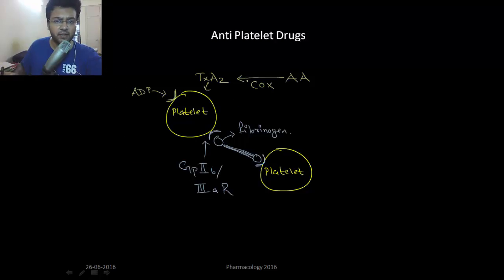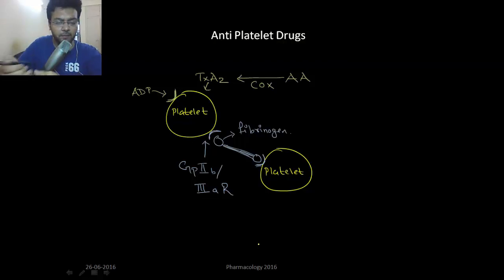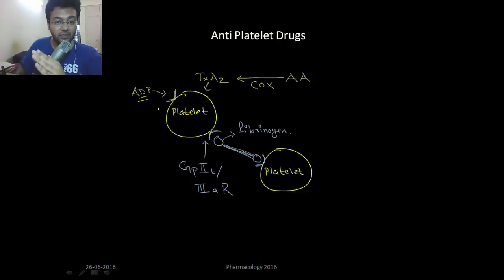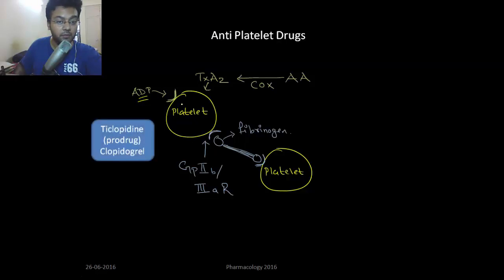Let's move to antiplatelet drugs. Suppose you have two platelets — these platelets want to aggregate with each other in order to stop bleeding. ADP stimulates two platelets to aggregate. If you want no aggregation, you need to give drugs which block ADP from binding with the platelet. These drugs are ticlopidine and clopidogrel. Ticlopidine is also a prodrug.